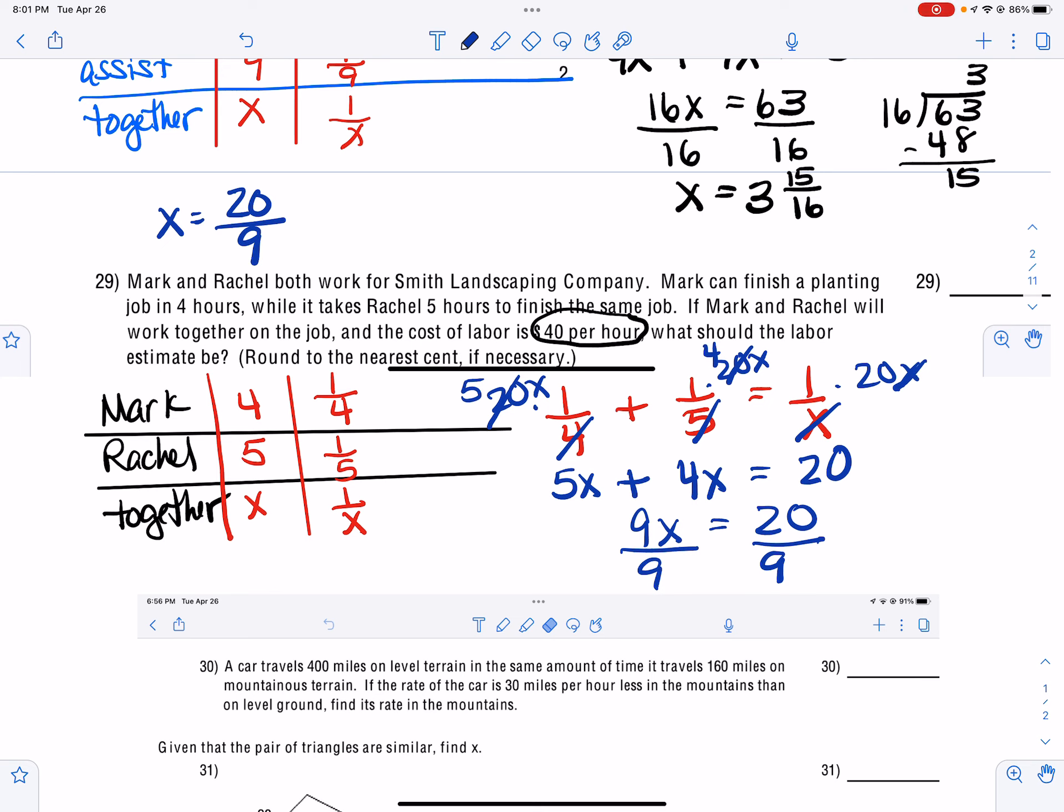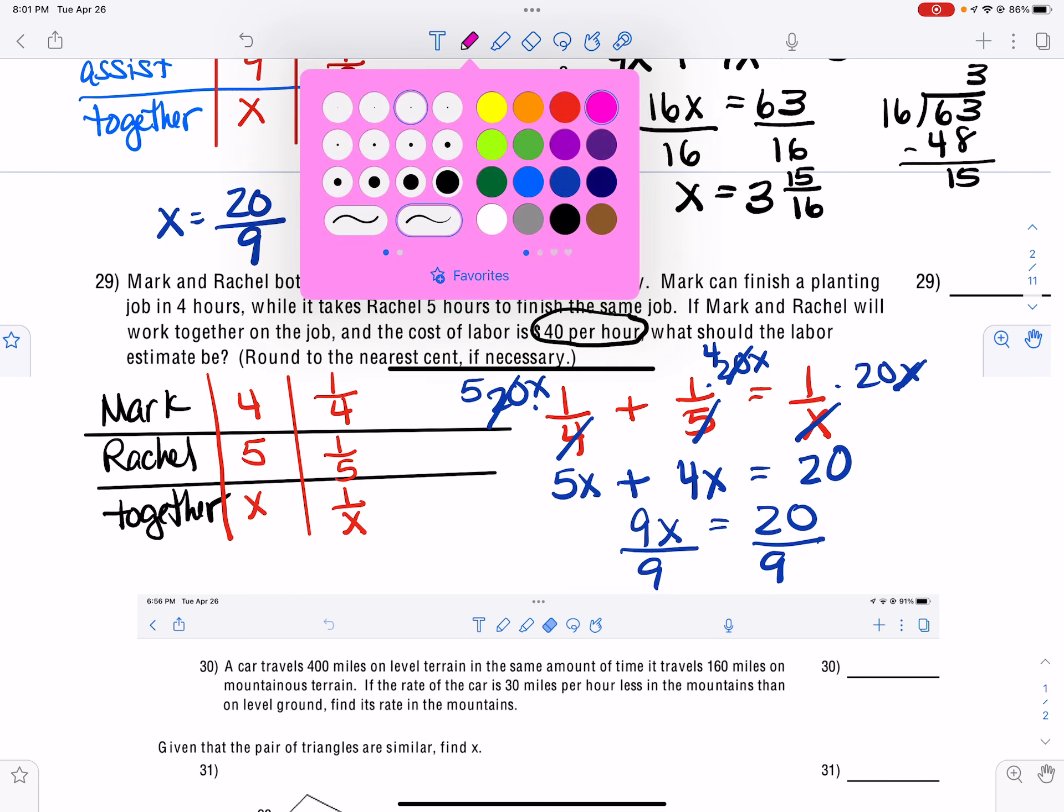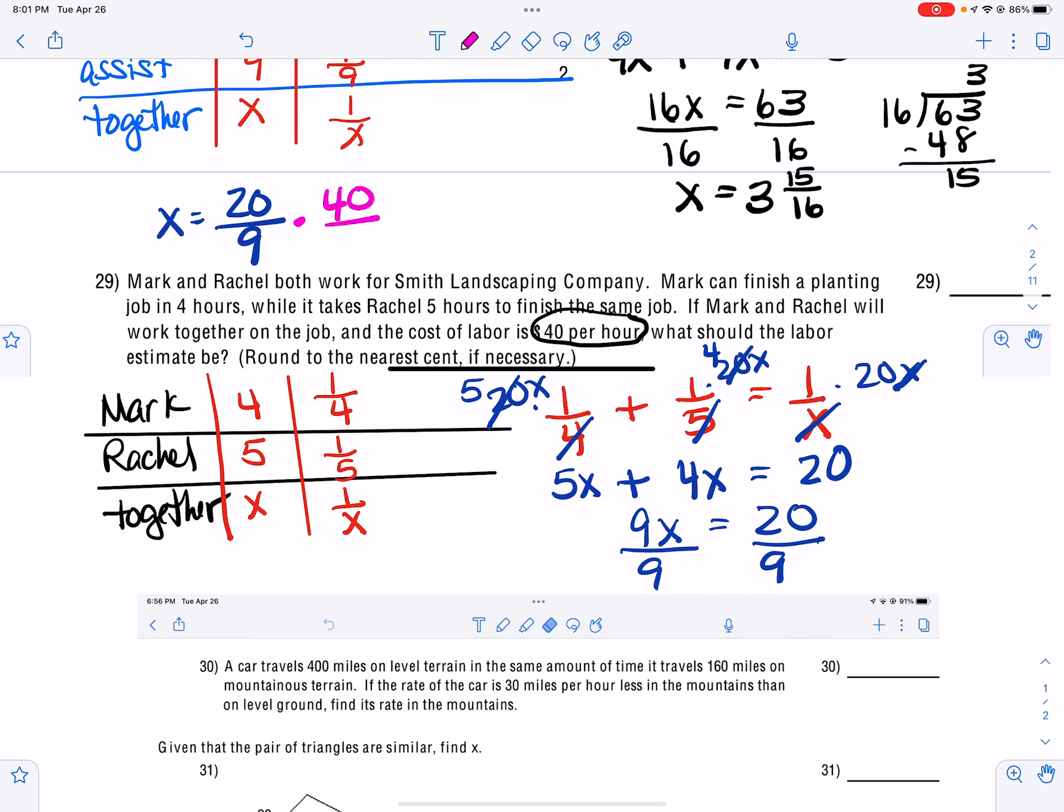But it is $40 per hour. So I am just going to multiply that by the cost of 40 over 1. And so when I take 20 times 40, I get 800. And when I divide that by 9, it's going to come out to be 88.888888, etc. And so we have to round that to the nearest penny, which means that we need two decimal places after the decimal point. And so we would round it to $88.89.